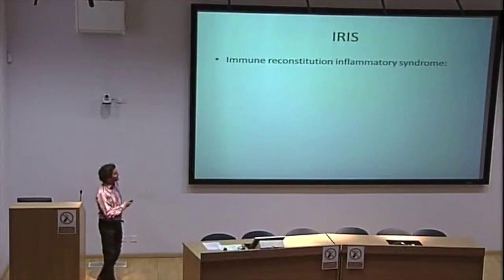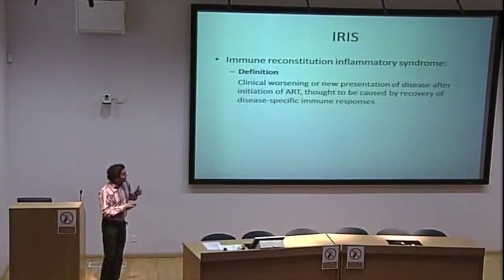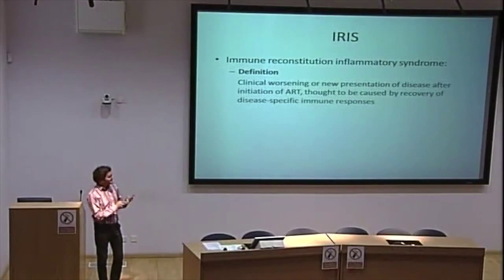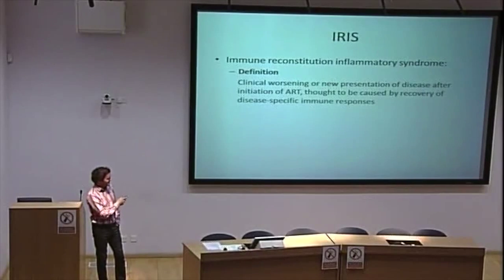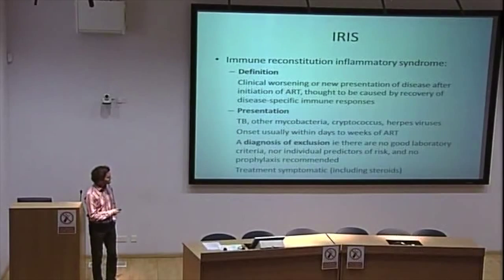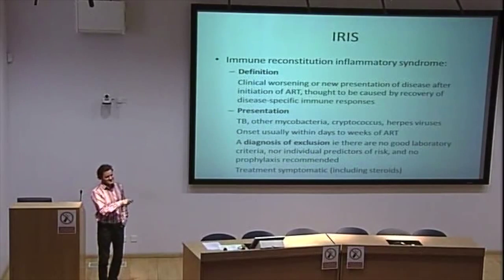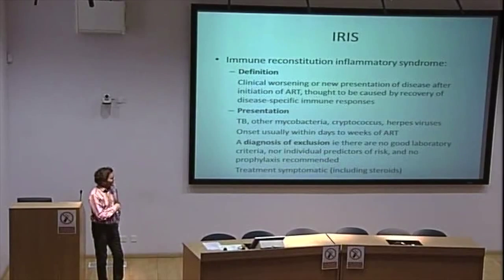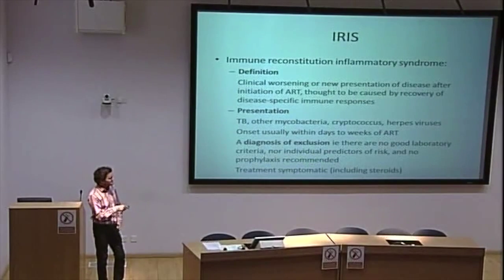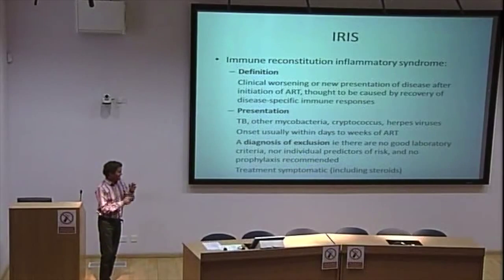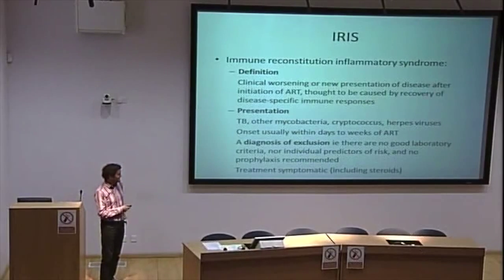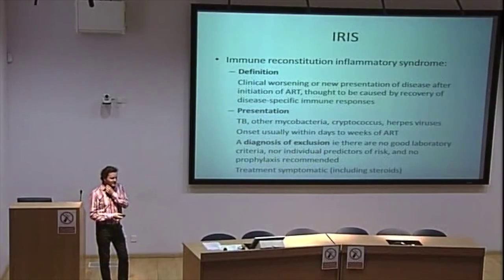IRIS — Immune Reconstitution Inflammatory Syndrome — is a clinical worsening or new presentation of disease after initiation of ART. It doesn't have to be TB; it could be cryptococcal disease or a variety of opportunistic infections. It's thought — though not certain — that it's because you get recovery of disease-specific immune responses. The onset is usually days to weeks after ART initiation, though you can see people months or even years later having a paradoxical reaction. It's a diagnosis of exclusion: there are no laboratory criteria, no individual predictors of risk, no prophylaxis recommended, and treatment is largely symptomatic — including steroids or therapeutic drainage for bad lymph nodes.